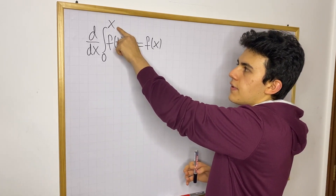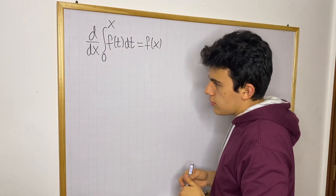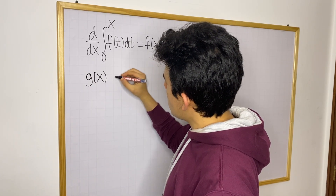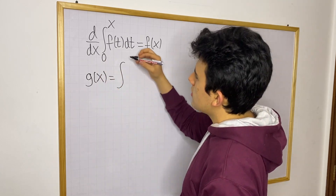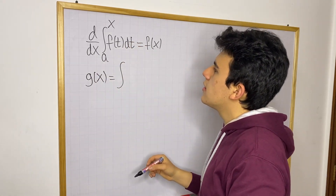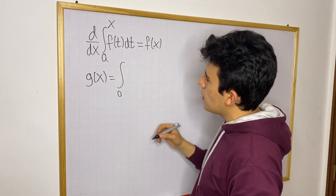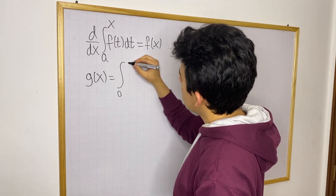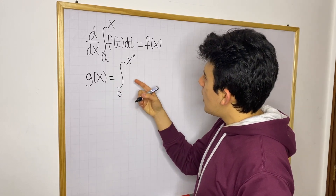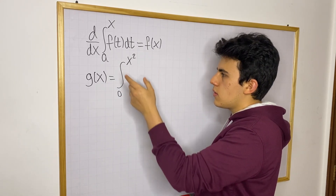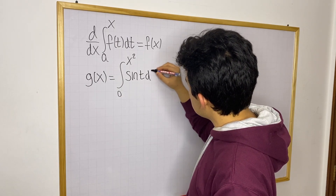What I want to emphasize today is what we can do if we don't have x as the input but instead have another function. So let's say g(x) is going to be the integral from a — let's just say 0 — up to x² as the upper bound, and the integrand is going to be something simple: sine of t dt.